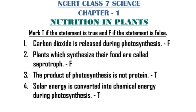Next we have true or false. Number one: carbon dioxide is released during photosynthesis — that's false. Oxygen is released during photosynthesis. Number two: plants which synthesize their food are called saprotroph — false. Plants which synthesize their food are called autotrophs. Number three: the product of photosynthesis is not protein — that statement is true. Number four: solar energy is converted into chemical energy during photosynthesis — that statement is true.